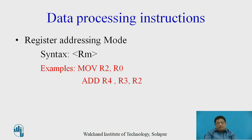The next addressing mode is called the register addressing mode, and the syntax is simply to write the register. For example, MOV r2, r0 — here the data is in the register and that register we are specifying in the instruction, which is why it is called register addressing mode. This MOV instruction transfers the contents of r0 into r2 register. The next example is ADD r4, r3, r2 — the operands are in r2 and r3 registers, so the values stored in r2 and r3 get added and the result is stored in r4 register.